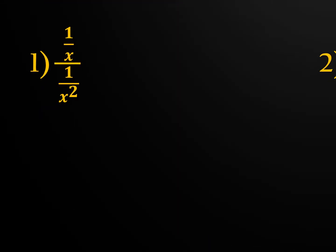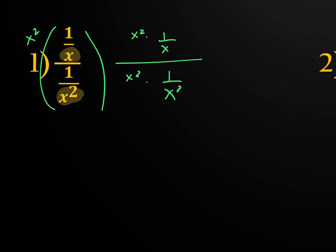The first example has 1 over x divided by 1 over x squared. For option one, look at both denominators and find the least common denominator of x and x squared, which is x squared — it has to be the highest exponent. Multiply both fractions by x squared: x squared times 1 over x gives x in the numerator; x squared times 1 over x squared, both cancel, giving 1 in the denominator. So the answer is x.